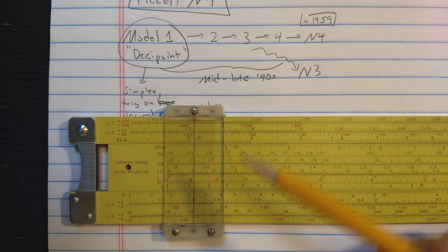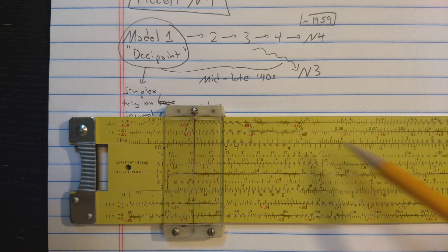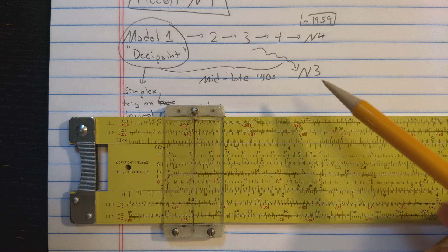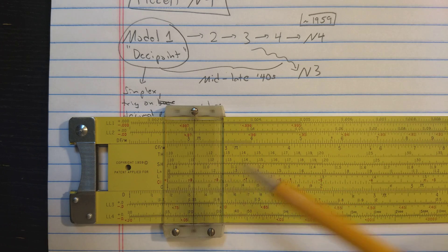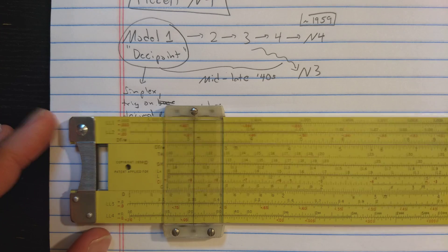Then later, Pickett is updating things, they're adding color, they're adding these synchro back-to-back scales over the years. They're adding this eye saver yellow color. By color I meant the red. And eventually the slide rule becomes the N4, which is this slide rule. It says copyright 1959, I'm not sure if that's exactly the year it first appeared.